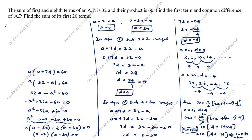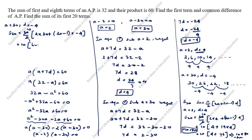For A = 30 and D = minus 4: S20 = 20/2 times (2 times 30 + 19 times minus 4) = 10 times (60 minus 76) = 10 times (minus 16) = minus 160. So S20 = minus 160. Thanks for watching this video.